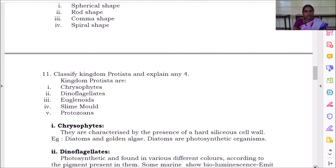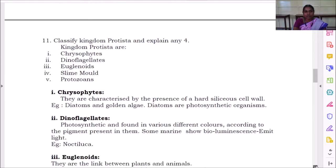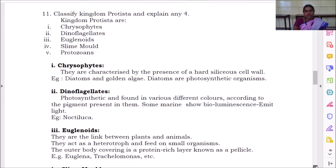Classify kingdom protista and explain any four. So what are the classifications of kingdom protista here? Chrysophytes, dinoflagellates, euglenoids, slime molds, and protozoans.